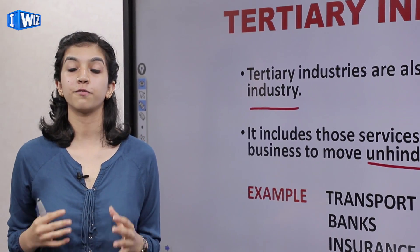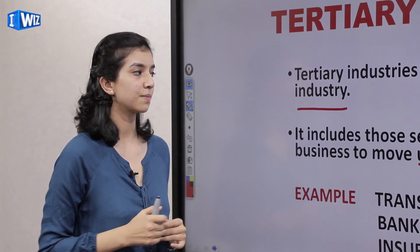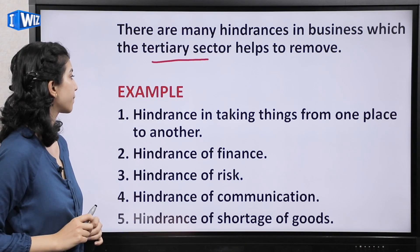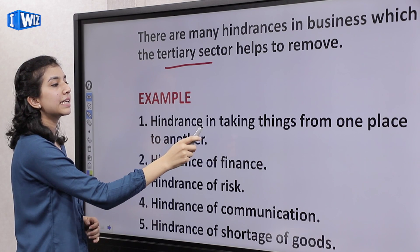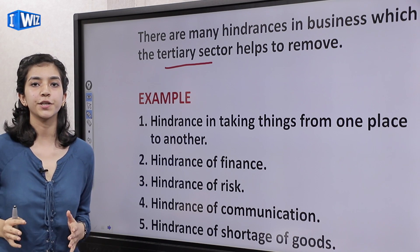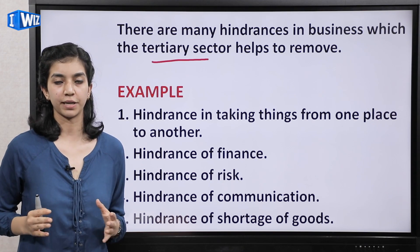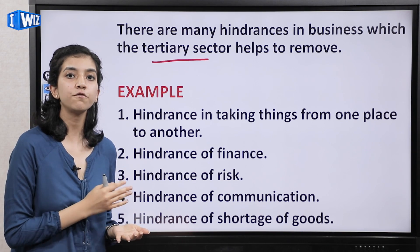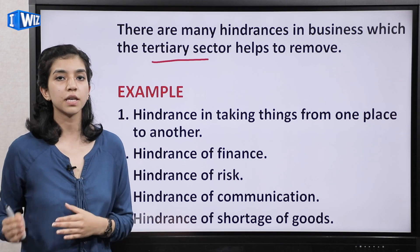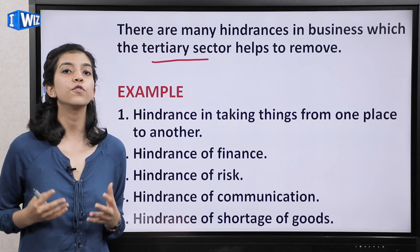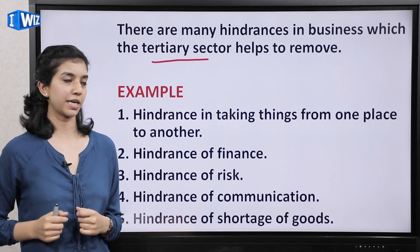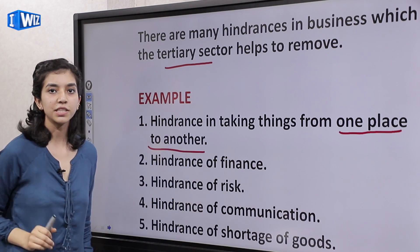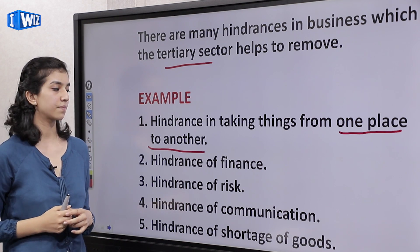There are many types of hindrances in business which the tertiary sector helps us to remove. For example, the hindrance of taking things from one place to another — har cheez har jaghe produce nahi hoti, but uski demand to har jaghe hoti hai. So wo place of production se place of consumption tak kaise pohunchega? Yahan pe transport sector hume help kerta hai — yeh cheezon ko ek jaghe se doosri jaghe tak le jaane mein help kerta hai. Yeh tertiary sector ka ek part hai.